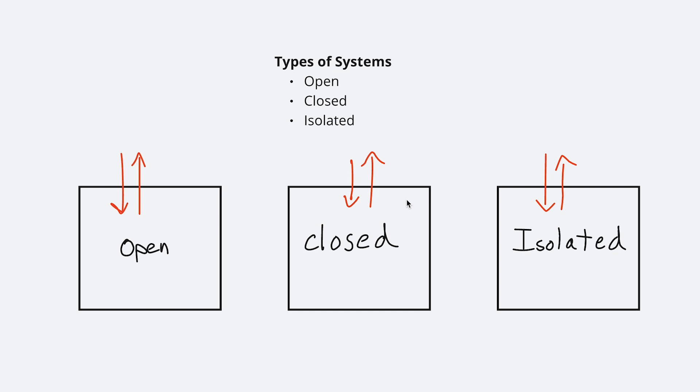First, an open system can exchange matter and energy with its surroundings. If we look at the human body, for example, we can easily see that the human body exchanges matter with the surroundings through breathing, eating, and waste. And for energy, just think about